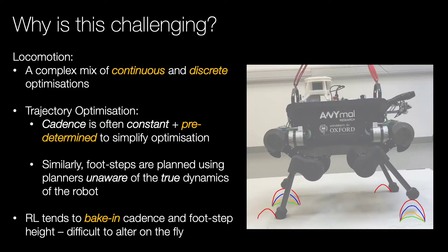Why is this challenging? Locomotion is a mixture of continuous and discrete optimizations which are non-convex and non-linear. However, direct optimization often uses predetermined and constant contact schedules to simplify the optimization. RL instead bakes in gait parameters and these are difficult to alter once trained.